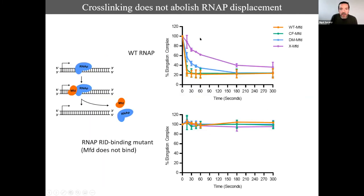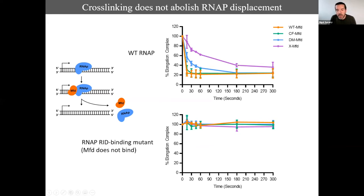Does cross-linking abolish RNA polymerase displacement? From the cryo-EM structures showing extensive wrapping, you might think it would, but in fact the cross-linked protein can still displace RNA polymerase — just less effectively than wild type. This is a proper specific loading at RNA polymerase: using a version of RNA polymerase that won't bind MFD's RNA polymerase interaction domain, none of the proteins can displace the elongation complex.